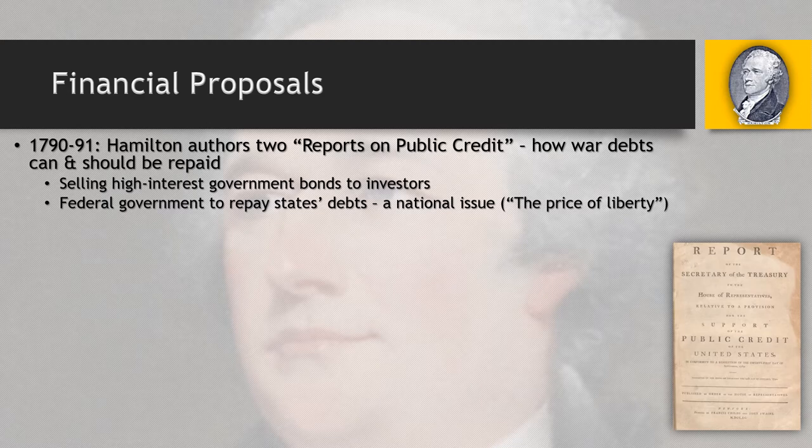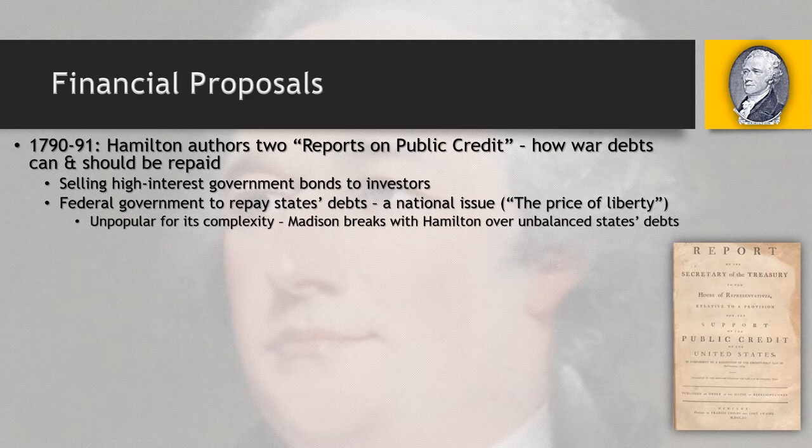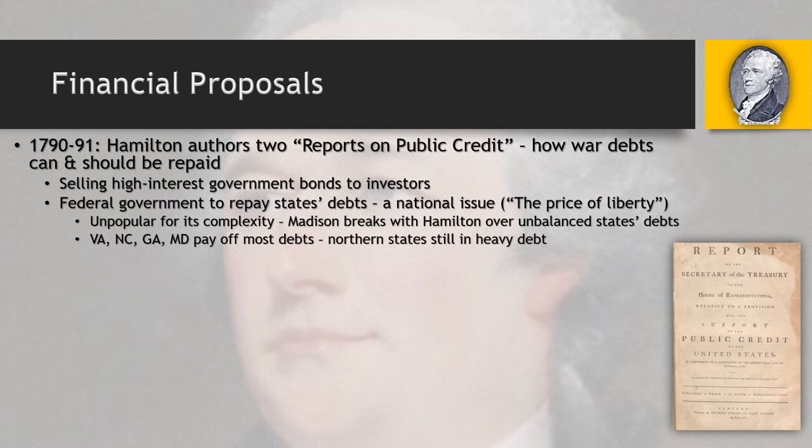Hamilton calls repaying state debts the 'price of liberty,' but it's very unpopular — each state owes different amounts, economies differ, and reasons differ. This disagreement causes Hamilton and James Madison to break apart, and they don't get along after this. Some states — Virginia, North Carolina, Georgia, Maryland — manage to pay off most of their debts, but the northern states carry the heaviest debt, largely because most of the war was fought in that region and their shipping economies were most severely damaged.